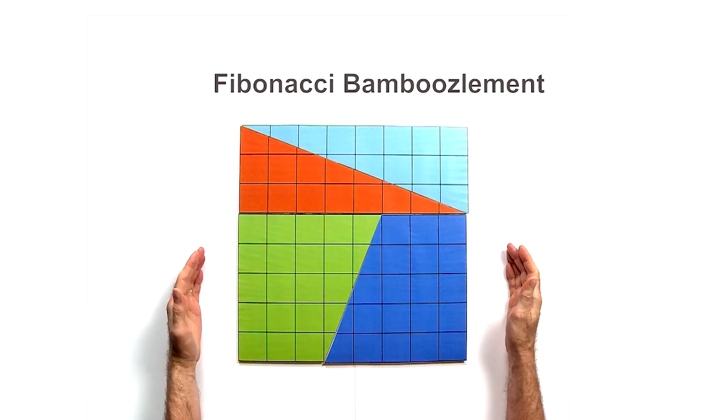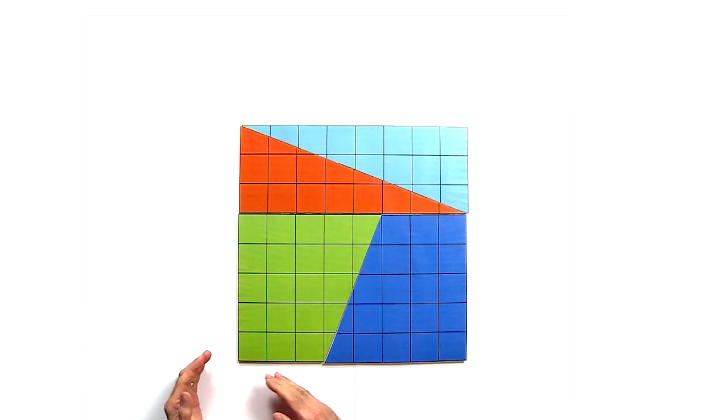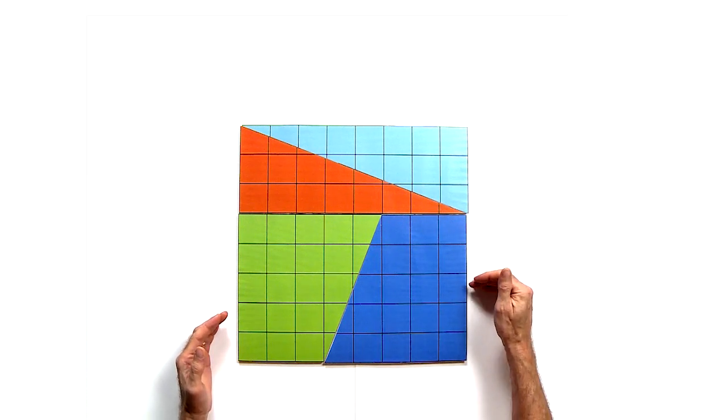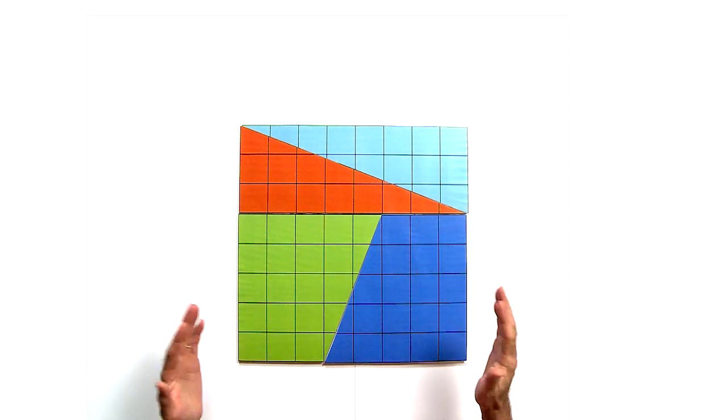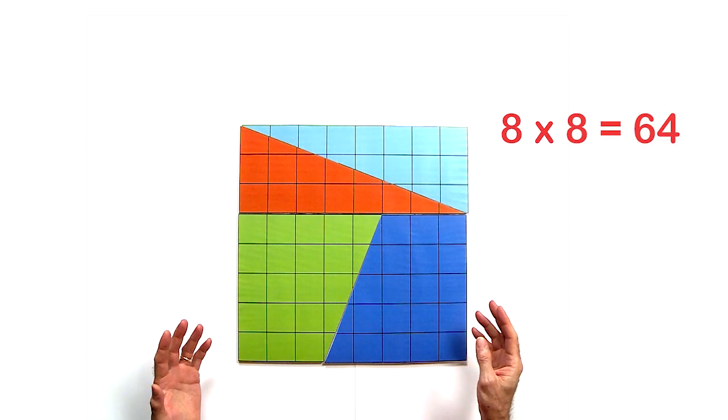The puzzle starts as a square with sides 1, 2, 3, 4, 5, 6, 7, 8 by 1, 2, 3, 4, 5, 6, 7, 8. So it has 64 of these little boxes.